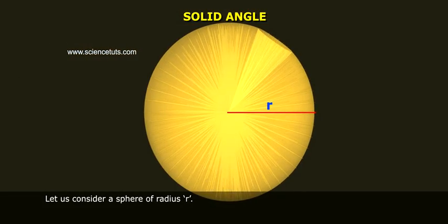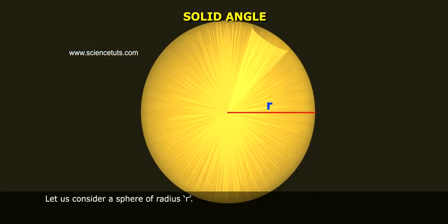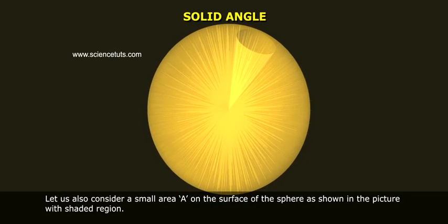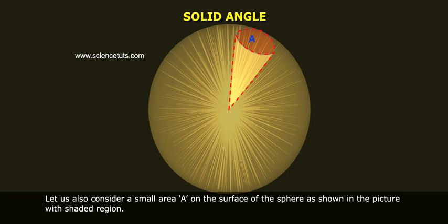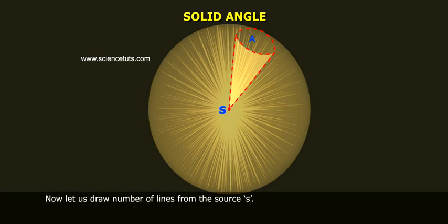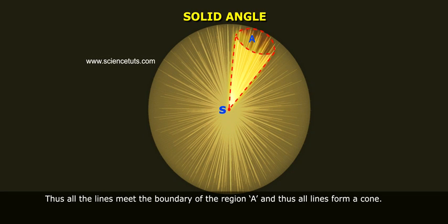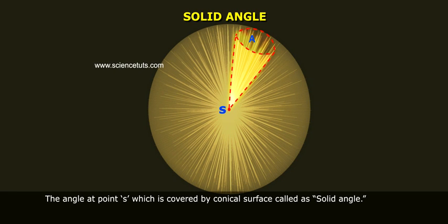Let us consider a sphere of radius R. Let us also consider a small area A on the surface of the sphere as shown in the picture with shaded region. Now let us draw a number of lines from the source S. All the lines meet the boundary of the region A, and all lines form a cone.